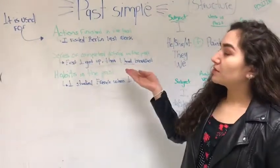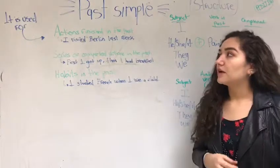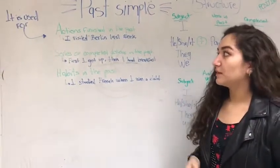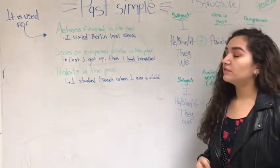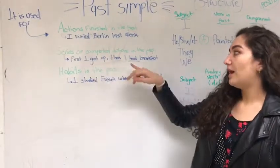We use past simple in actions that finish in the past. For example, I visited Berlin last week, or a series of completed actions in the past. First, I got up, then I had breakfast,